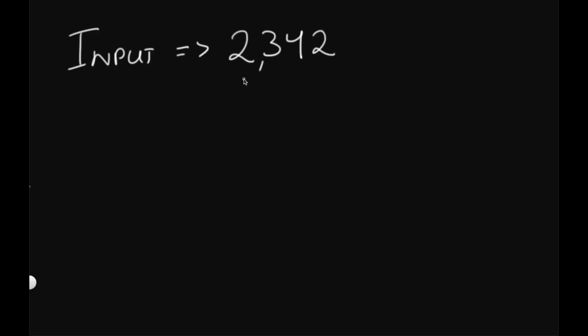For our first solution, let's say we're given an input of 2342. Our first step is to add all the digits together: 2 plus 3 plus 4 plus 2. But how do we actually iterate through each digit? Let's see how we can do that.